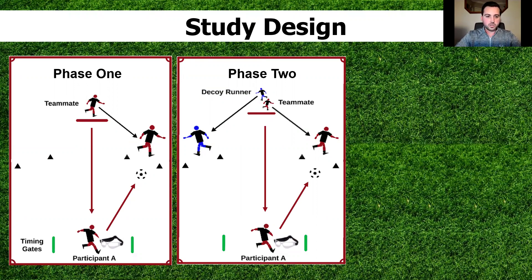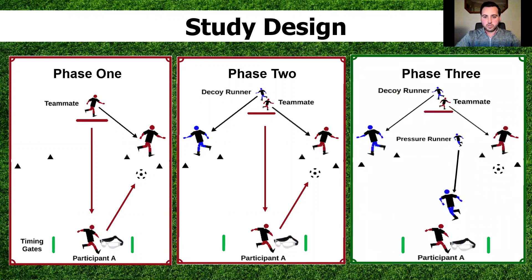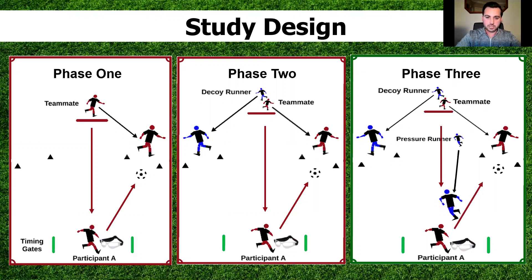For phases one and two, the testing and intervention phases were the same, split across three groups: the chin-up goggles group, the practice group who did everything without the goggles, and the control group who only took part in testing. In phase three — implemented with a university soccer team performing at the highest level in university sports — we added a pressure runner. The teammate and decoy runner had the same roles as in phases one and two, but the pressure runner would run directly at the participant after the ball was passed to them, actively applying pressure without tackling, before they played their return pass.